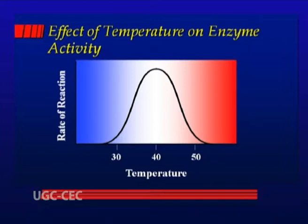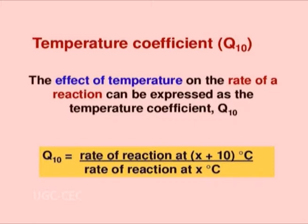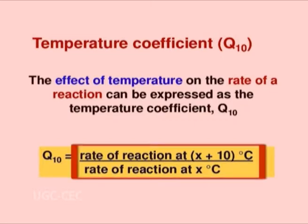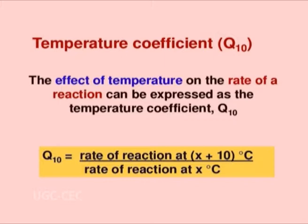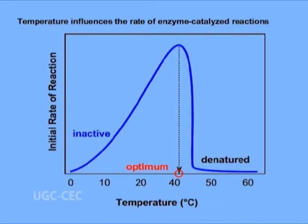Most enzymes in the human body have an optimum temperature of around 37°C. The increase in enzyme activity for every 10°C increase in temperature is known as the temperature quotient, represented as Q10. It is defined as the ratio of the reaction rate at temperature x+10°C to that at x°C. The Q10 value is usually 2, meaning the rate of reaction doubles when the temperature is increased by 10°C. The graph plotted using enzyme velocity versus temperature is a bell-shaped curve, from which the optimum temperature can be determined.